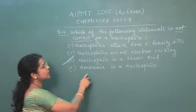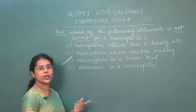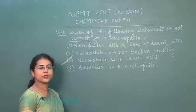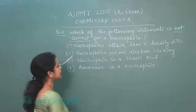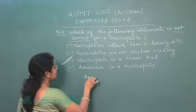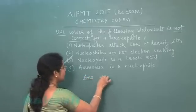Nucleophiles are always Lewis bases because either they have negative charge or they have lone pair of electrons. The fourth statement is ammonia is a nucleophile. It is true because nitrogen has a lone pair electron in ammonia. So in this question the correct answer should be third option.